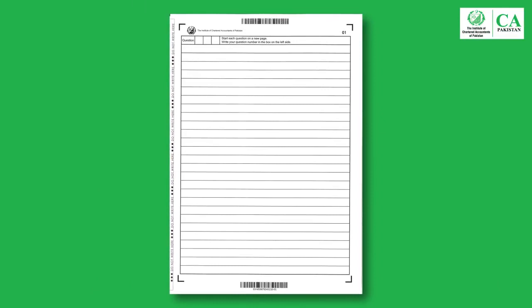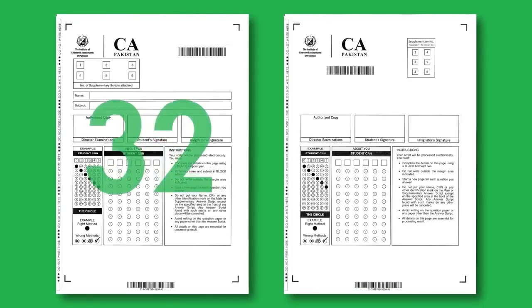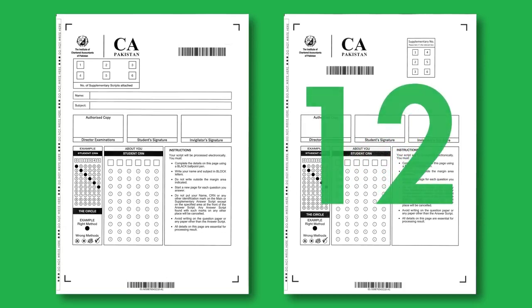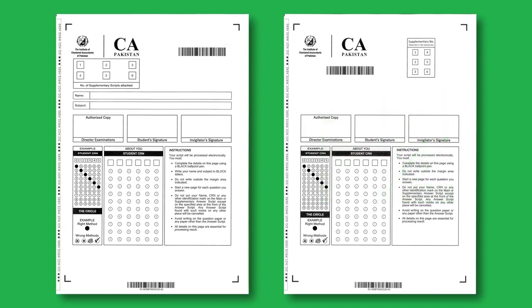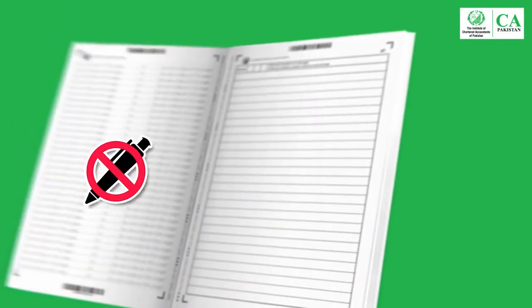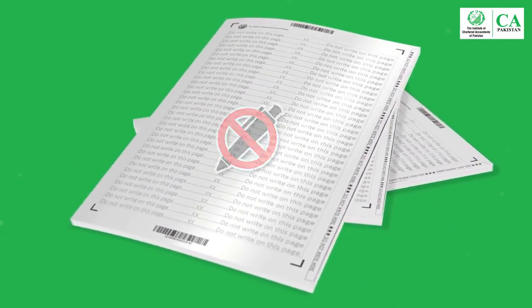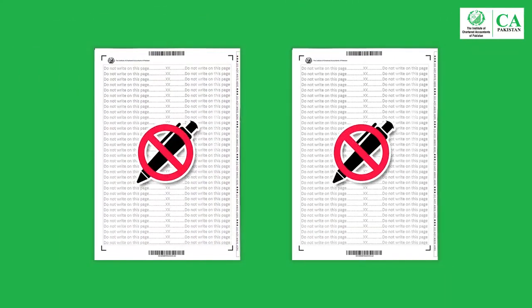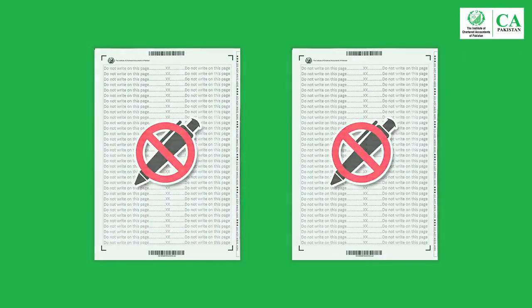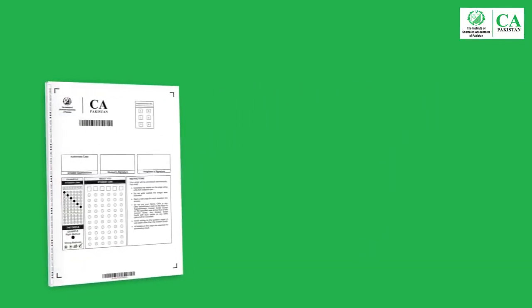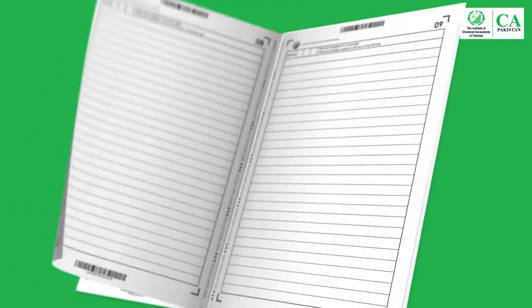Now I will explain how to write inside the answer script. There are 32 pages in the main answer script and 12 pages in the supplementary answer script designed for e-marking. You should not write your answers on the back page of the front page and the back cover page of your answer script, as anything written on these pages will not be considered for marking. You are allowed to write answers on 29 pages in the main answer script and 9 pages in the supplementary answer script.